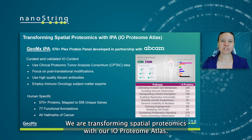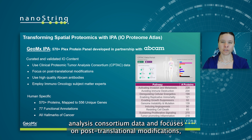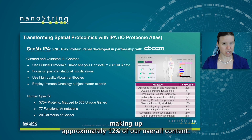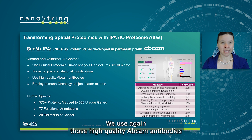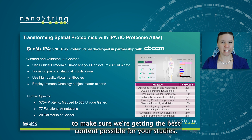We are transforming spatial proteomics with our IO proteome atlas. Our curated and validated IO content uses clinical proteomic tumor analysis consortium (CPTAC) data and focuses on post-translational modifications, making up approximately 12% of our overall content. We use those high-quality Abcam antibodies and employ our immuno-oncology subject matter experts to make sure we're getting the best content possible for your studies.